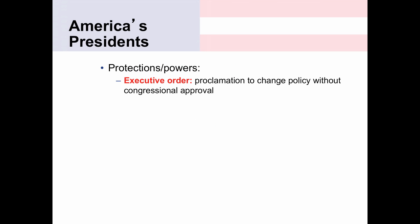Another power the president has is an executive order, which is simply a proclamation to change policy in the executive branch without congressional approval. A common example is an executive order giving federal employees a half day off on Christmas Eve—obviously something the president does not need legislation from Congress to do. As the chief executive, sort of like a CEO of a business, the president can make decisions that relate to executive branch employees. However, the use of executive orders has increased over the past 40 to 50 years, with presidents relying on them a lot more than in the past.